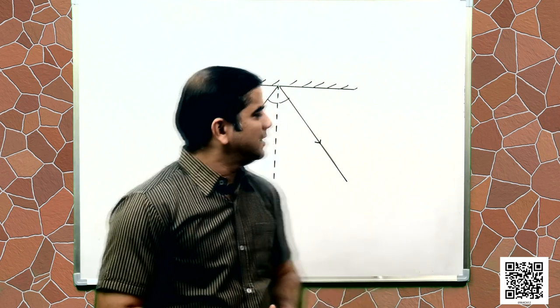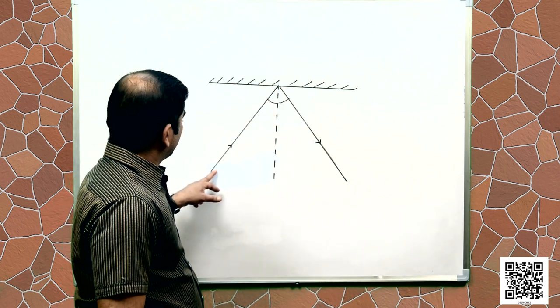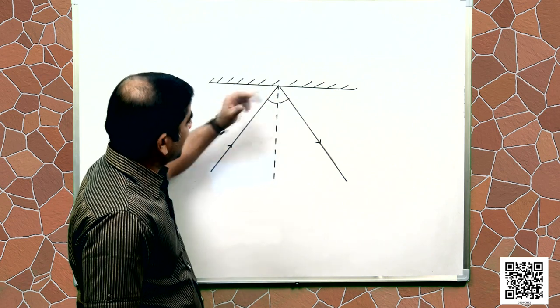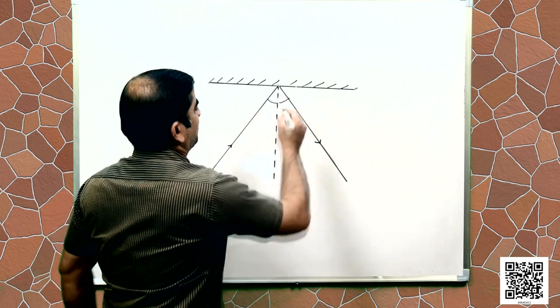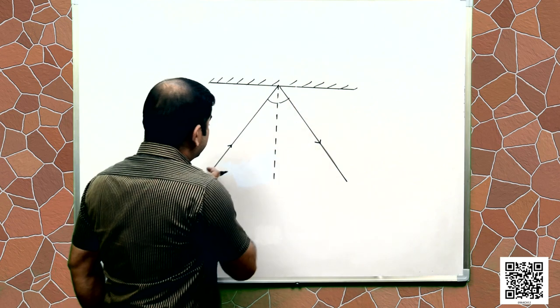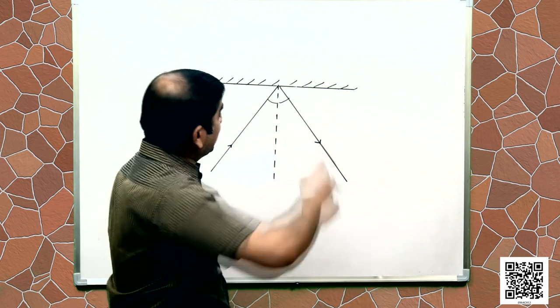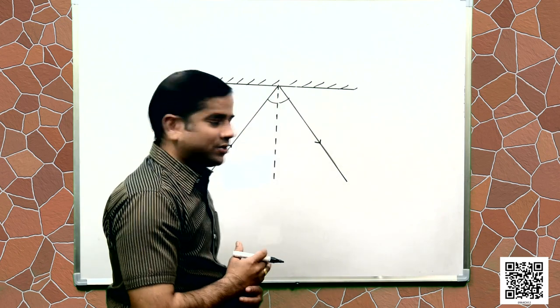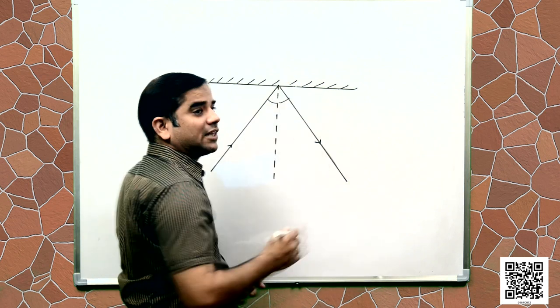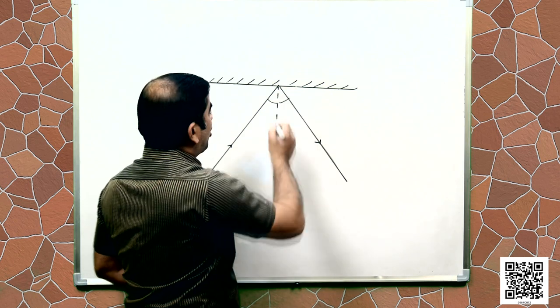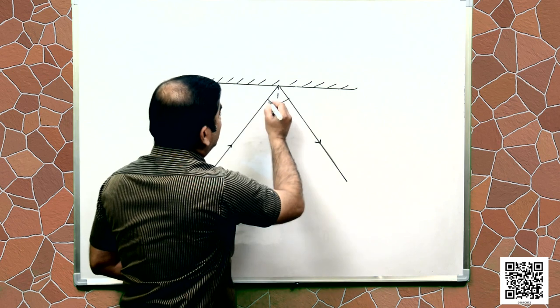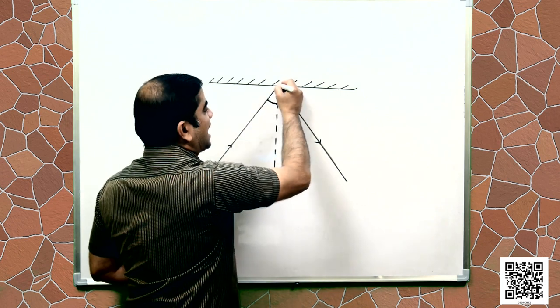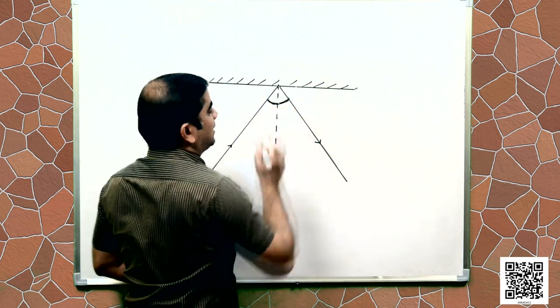Let me draw a diagram so that you can better understand the reflection of sound. This is the direction of sound — sound travels in this direction and this is the surface, which is polished or rough. This is the point at which the sound gets in contact with the surface, and from this point the sound is reflected in another direction because it cannot penetrate through the surface. It falls on this point and reflects in another direction. At this point, if we draw a perpendicular line that is called the normal, the incident sound and the reflected sound make the same angle with the normal.